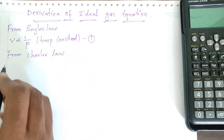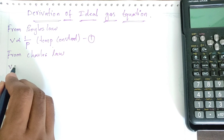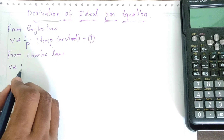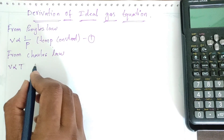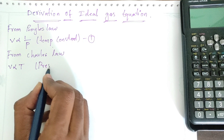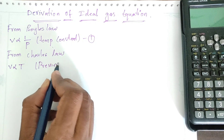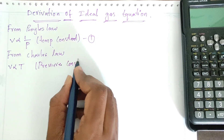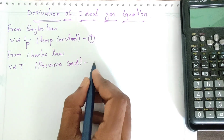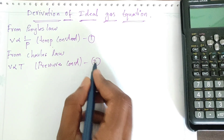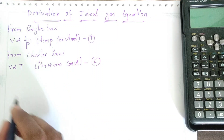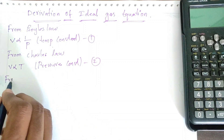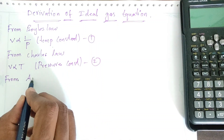From Charles' law, the volume of a given gas is directly proportional to absolute temperature, keeping pressure constant. This is equation number two.